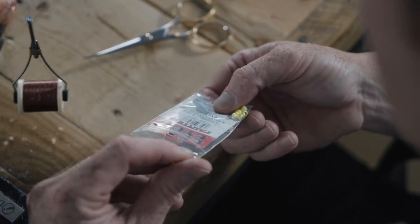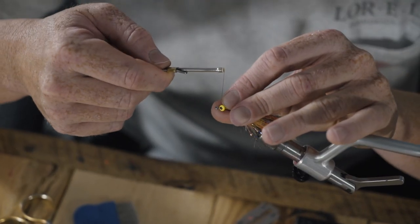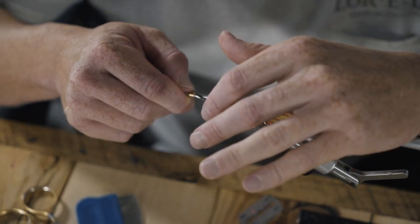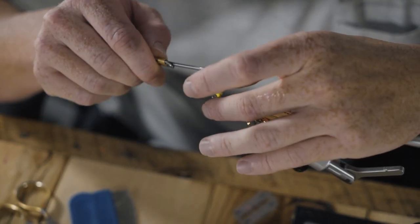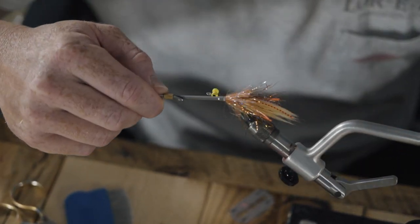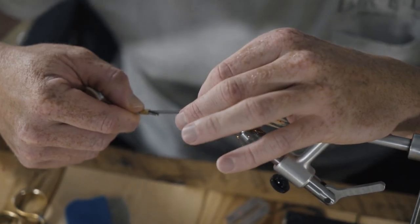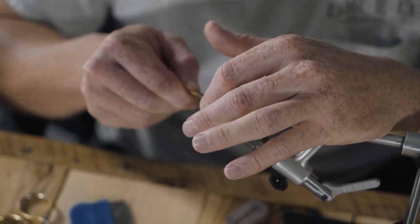Got some chartreuse dumbbell eyes. This is small. This is the weight. I like to...smaller mediums about the heaviest dumbbell eye that I like to tie in just because any heavier than medium and they get a little too heavy to throw with an eight weight.